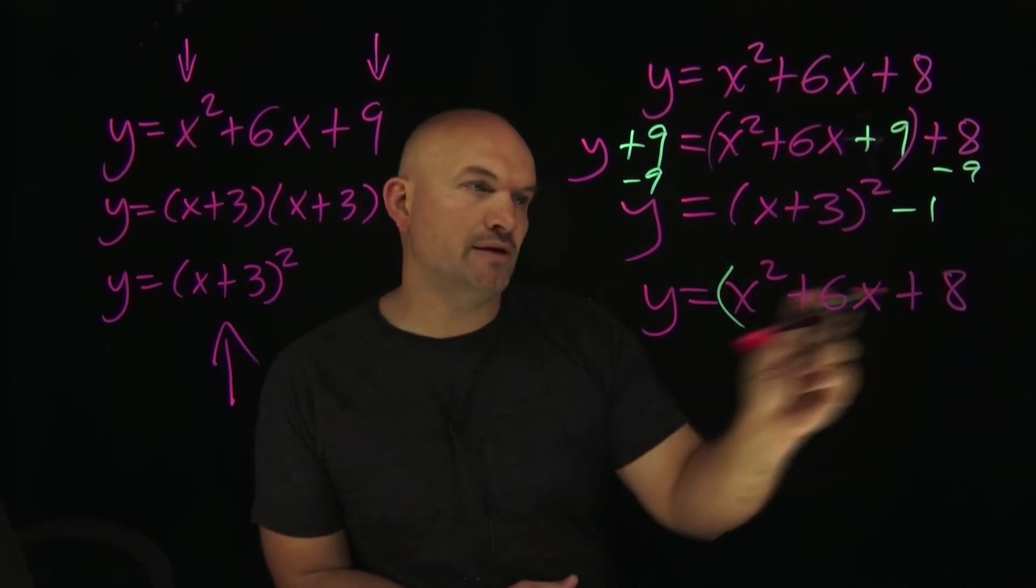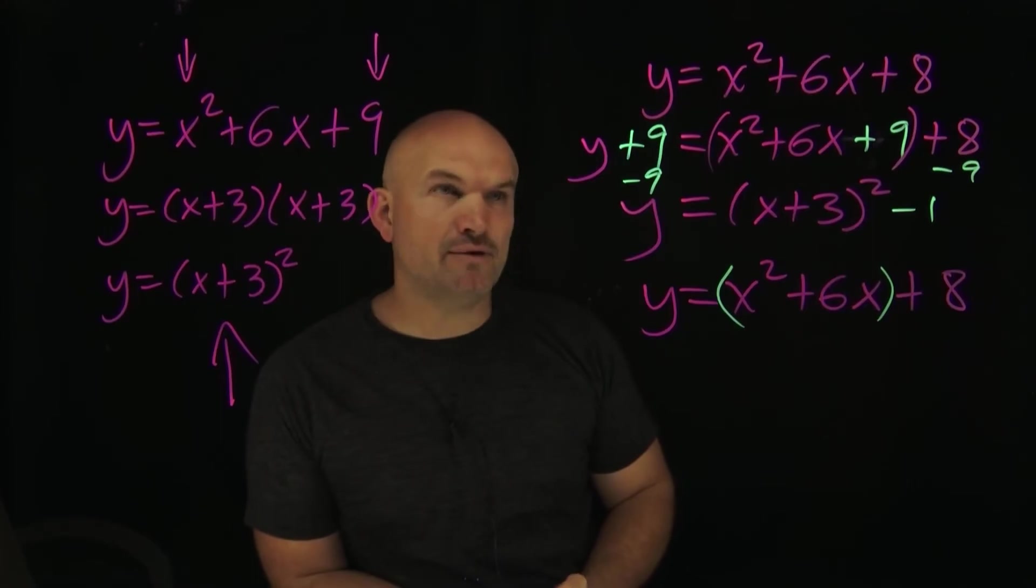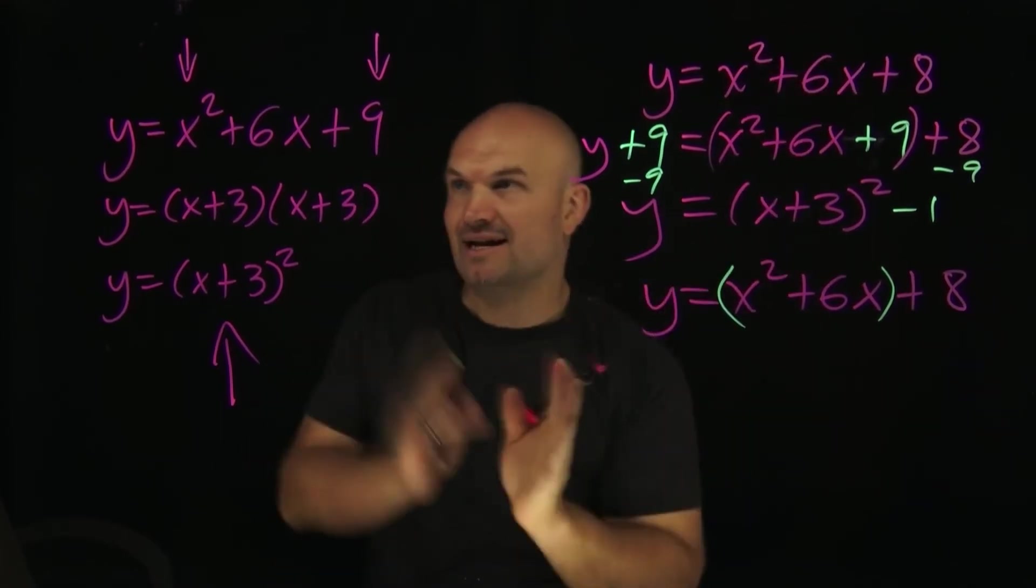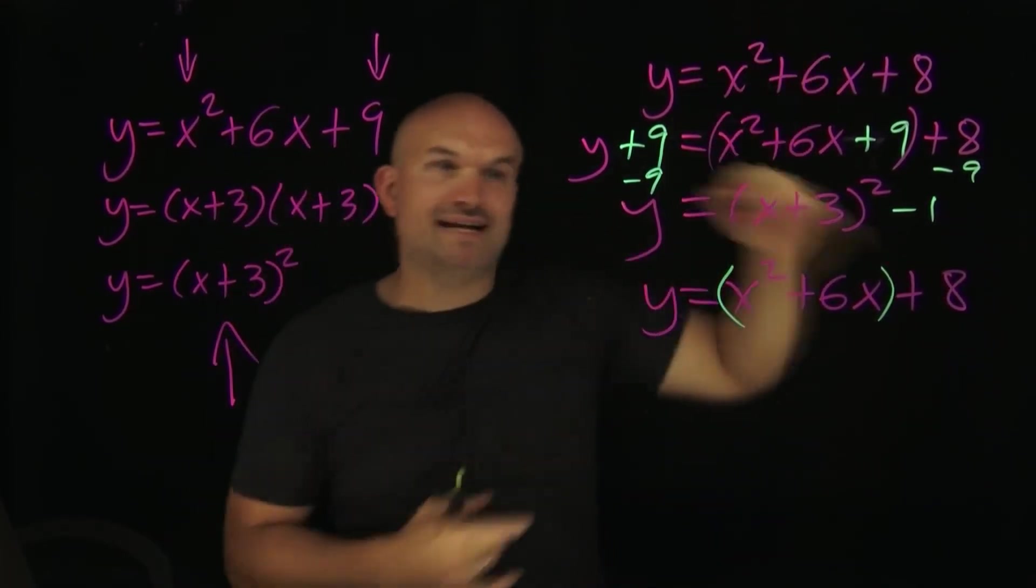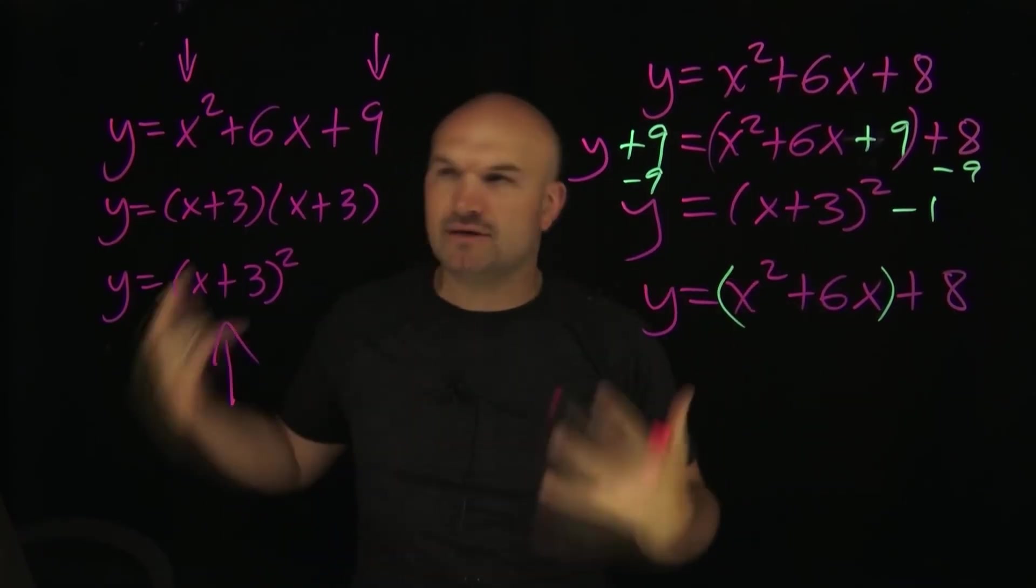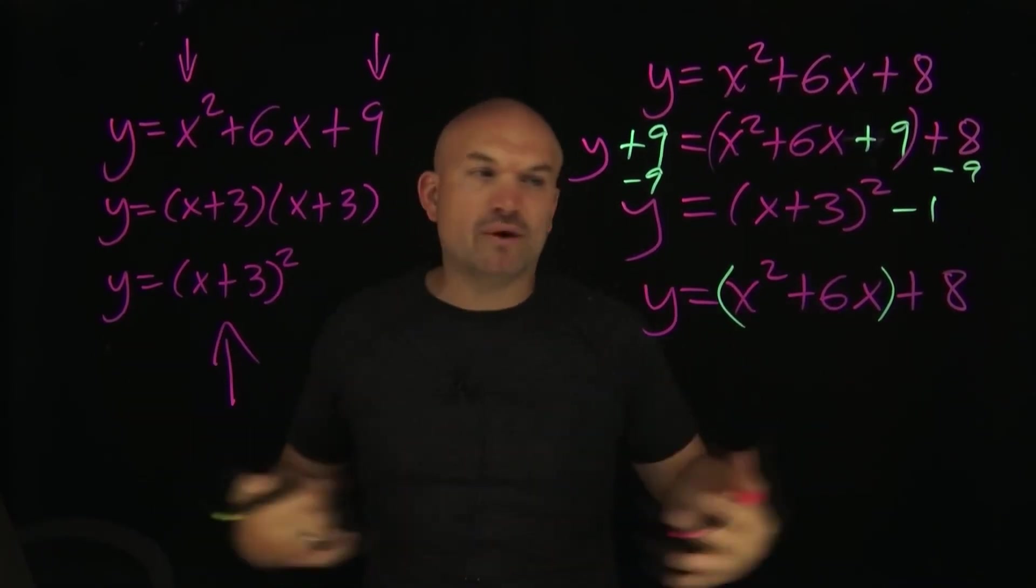Then the next thing we want to do is—this one was obvious, I wanted you to recognize that relationship—but one of the hard things about completing the square is it's not always as obvious what the value is that creates the perfect square trinomial.